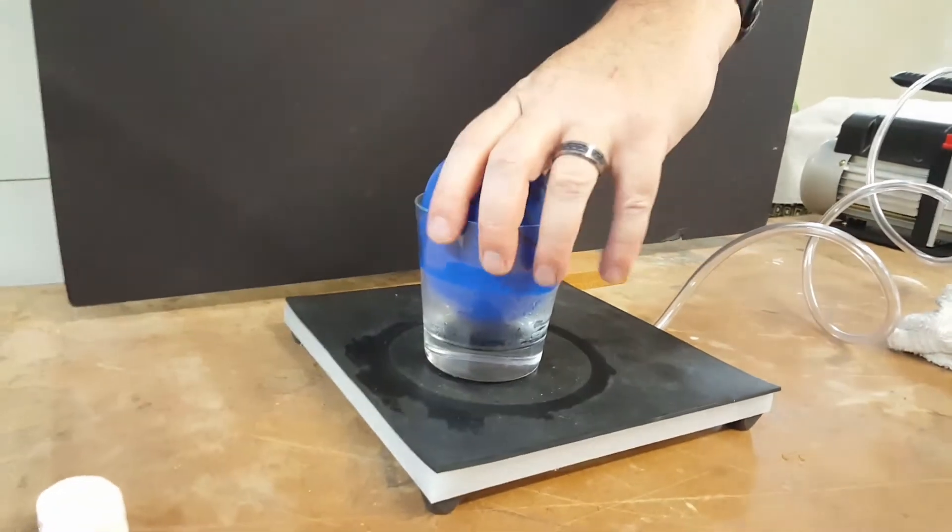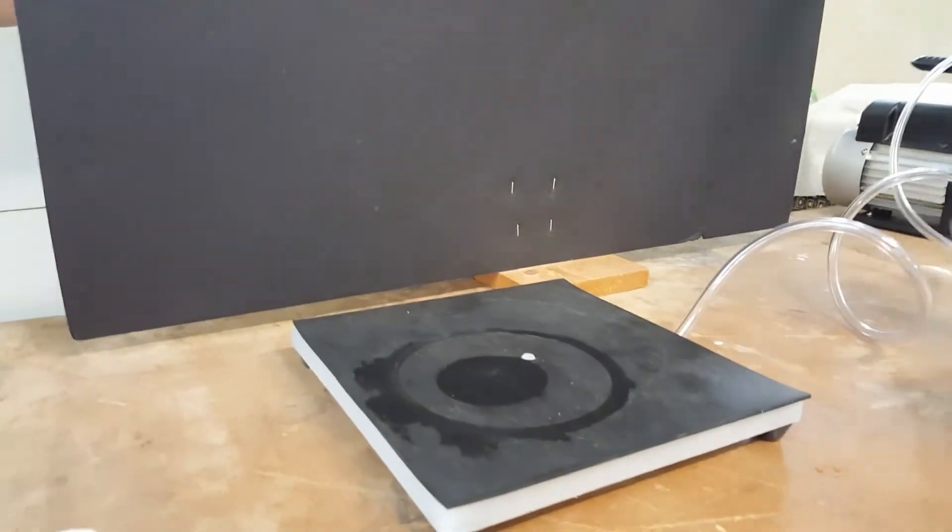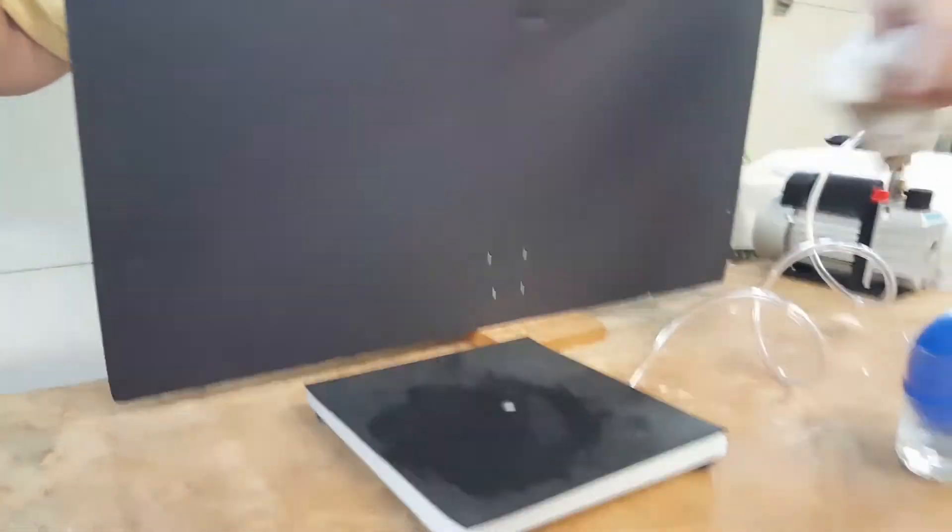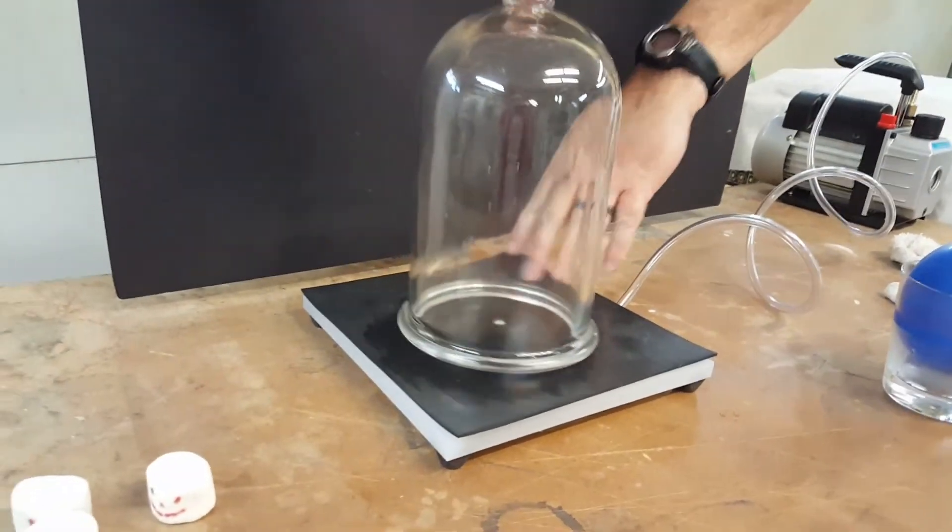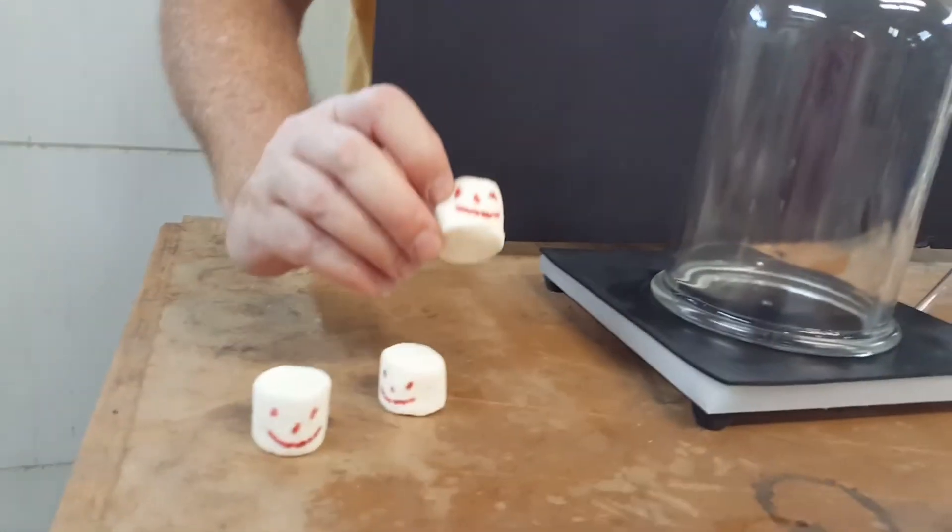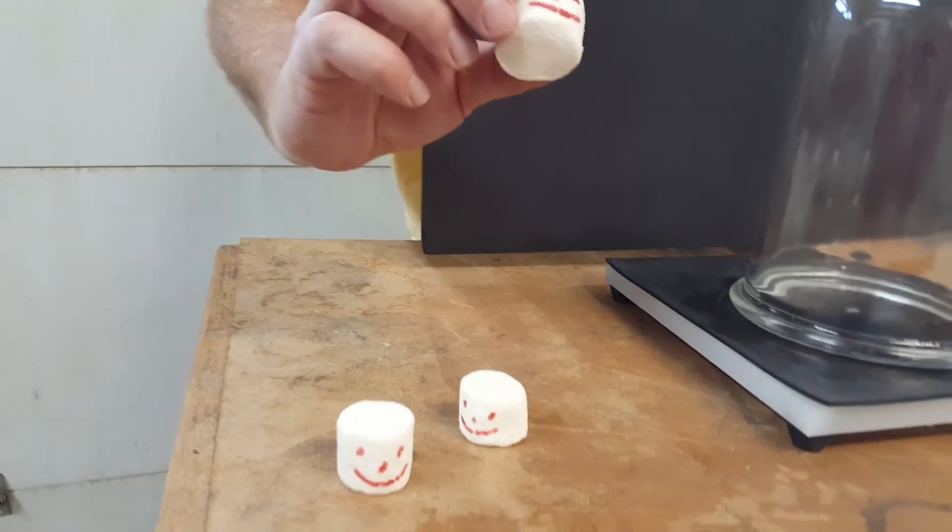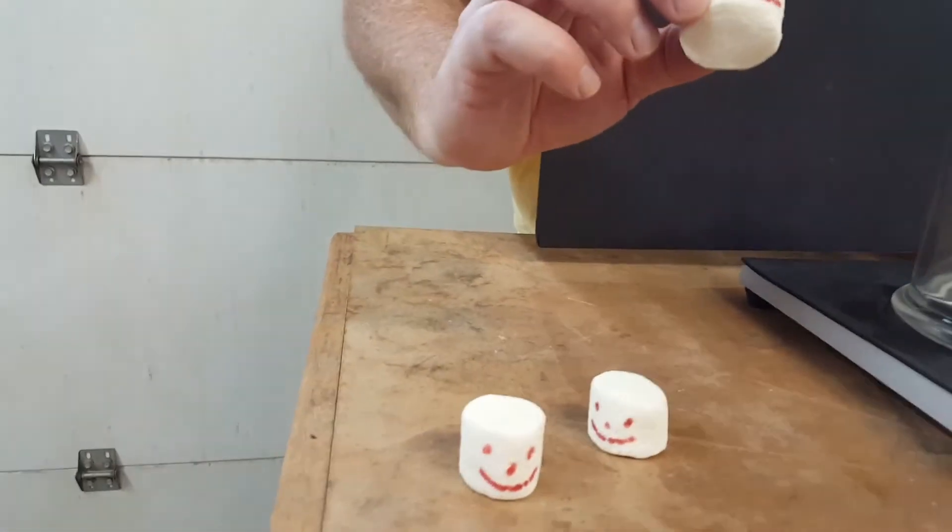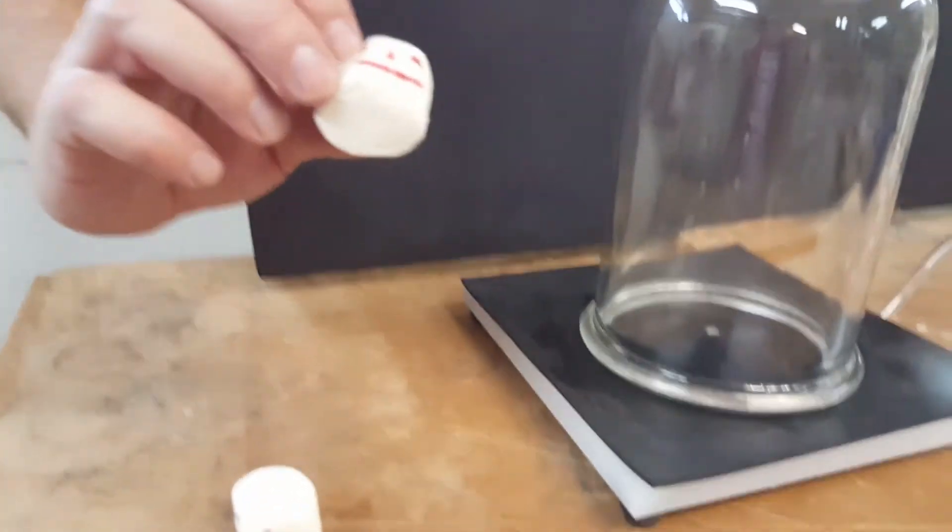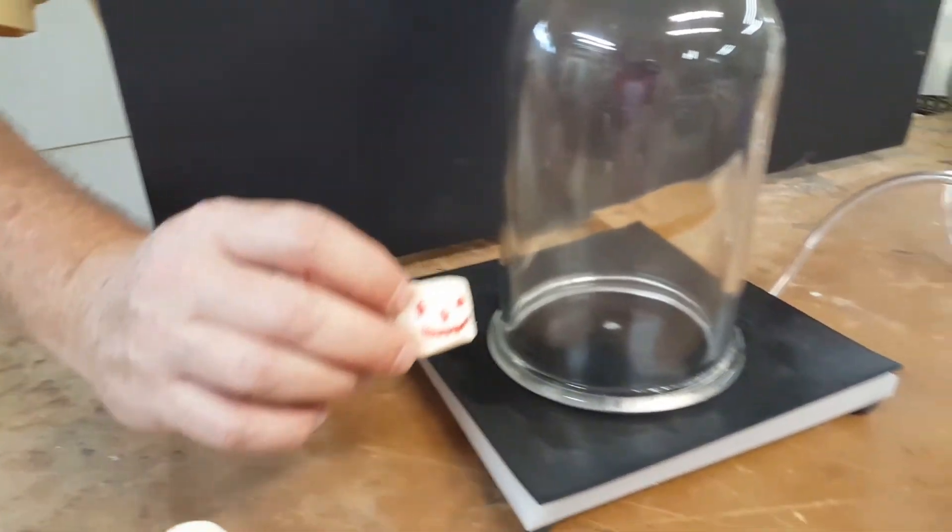So for our last experiment. Still making a mess here. We're going to take some marshmallows. These are happy little marshmallows. But what makes these so light and fluffy is they're full of air pockets. Thousands and thousands and thousands of little air pockets. So we're going to see what happens to these guys.